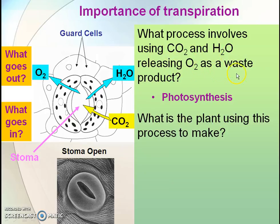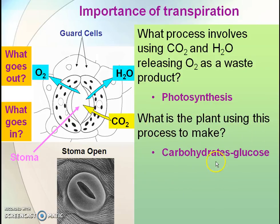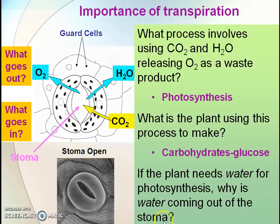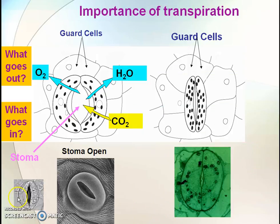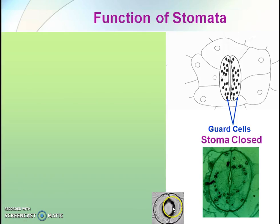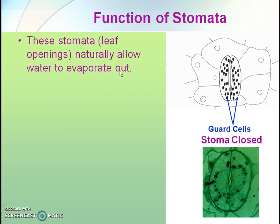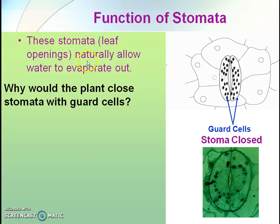What is the process involving using CO2 and H2O and releasing oxygen as a waste product? Photosynthesis. What is the plant using this process to make? Carbohydrates, glucose. If the plant needs water for photosynthesis, why is water coming out of the stoma? This is the stomata and its function.